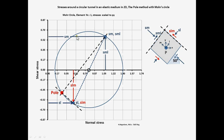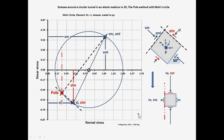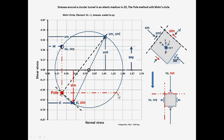To find the stresses acting at the vertical and horizontal planes of this element, draw parallel lines to the element's planes through the pole. The line parallel to the vertical plane intersects Mohr's circle at the coordinates normal stress S-Y and shear stress S-YX.